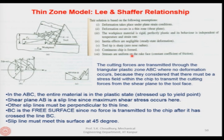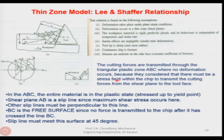The cutting forces are transmitted through the triangular plastic zone ABC. They say that if there is a resultant force acting on the chip from the workpiece through the shear plane, for this to be transmitted toward the rake face of the tool, it has to go through a triangular plastic zone ABC where no deformation occurs. There must be a stress field within the chip to transmit the cutting forces from the shear plane to the tool face.